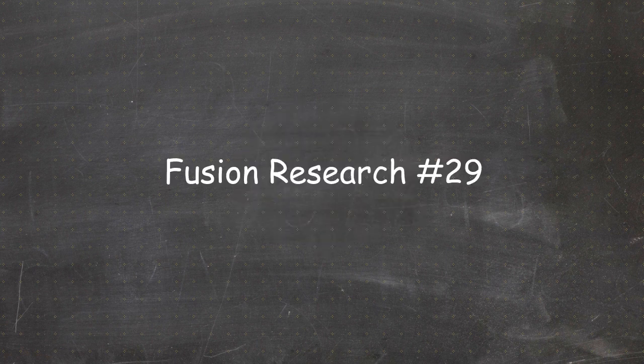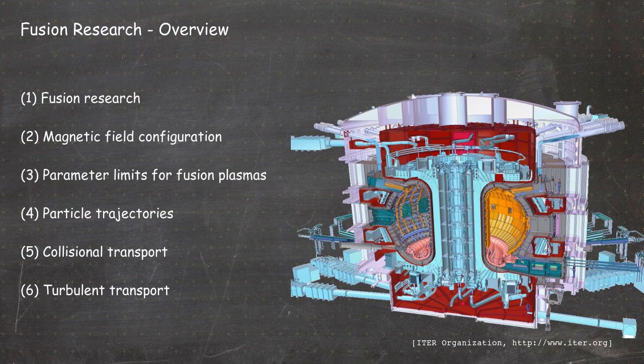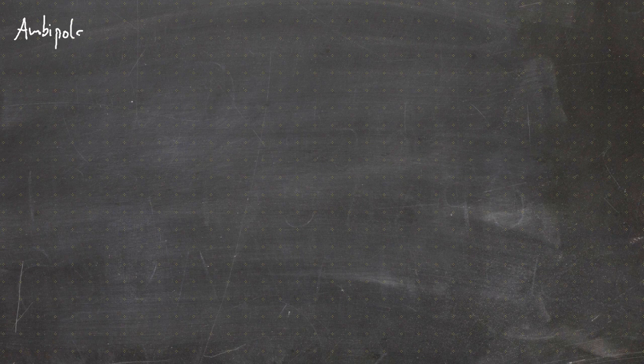Hello everybody and welcome to video number 29 of the online version of the diffusion research lecture. We are in chapter 5, collisional transport. In the last video we talked about stellarator-specific elements for neoclassical transport and about the diffusion coefficient in a stellarator. In this video we will briefly talk about the ambipolar electric field.